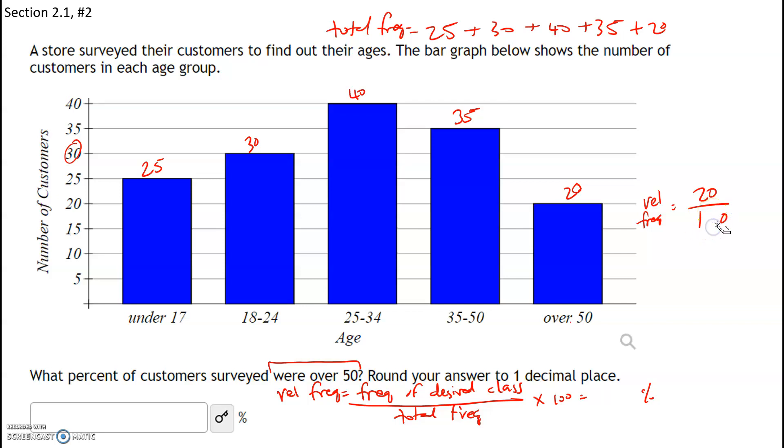So relative frequency is 20, that is the frequency of the desired class which is over 50, divided by the total frequency which is 150. Once we do that, that's going to give us a decimal. Let's take 20 and divide that by 150. This gives us a decimal which is 0.133333.